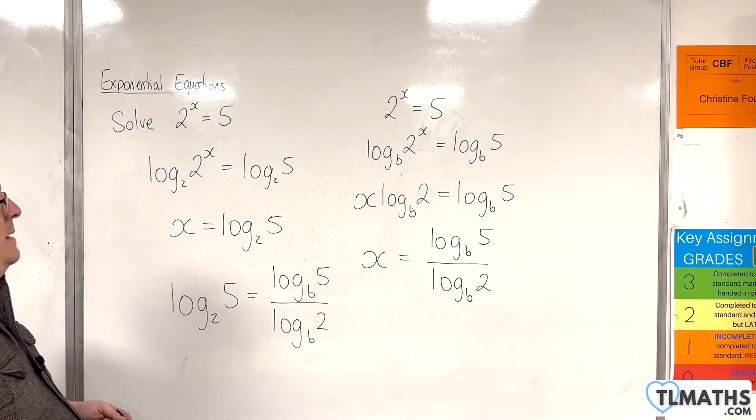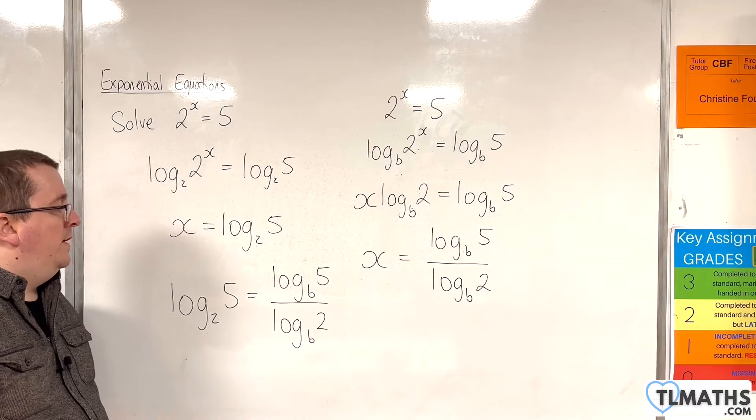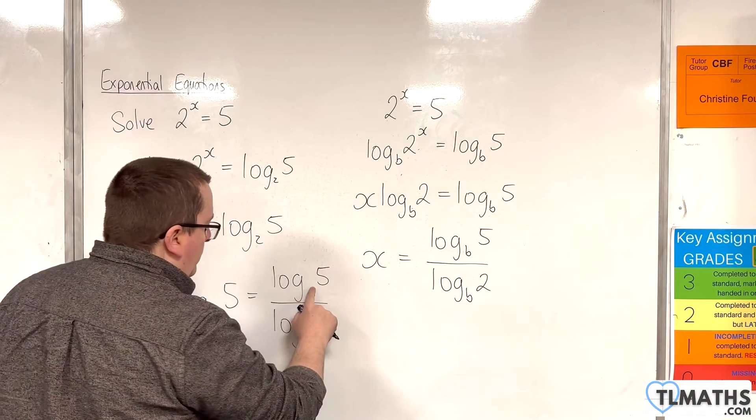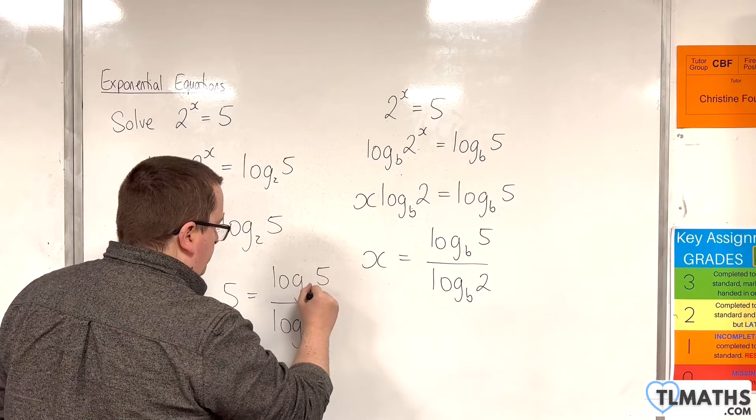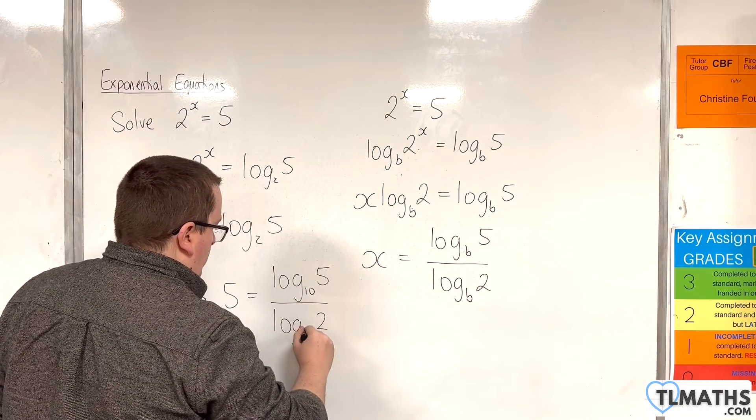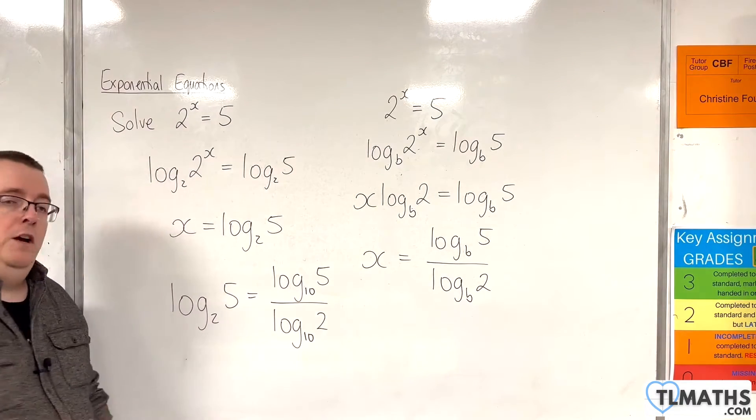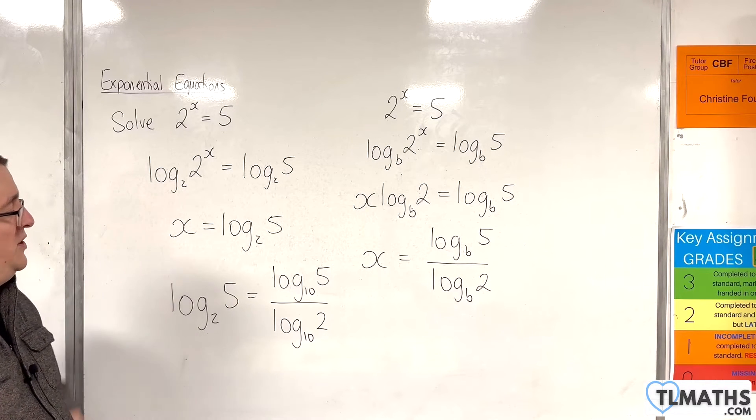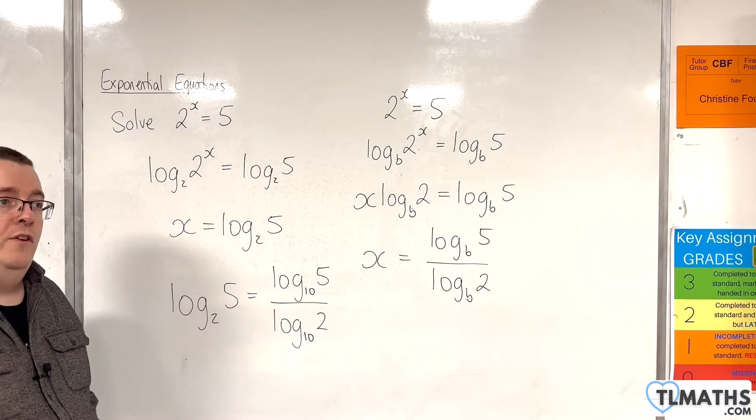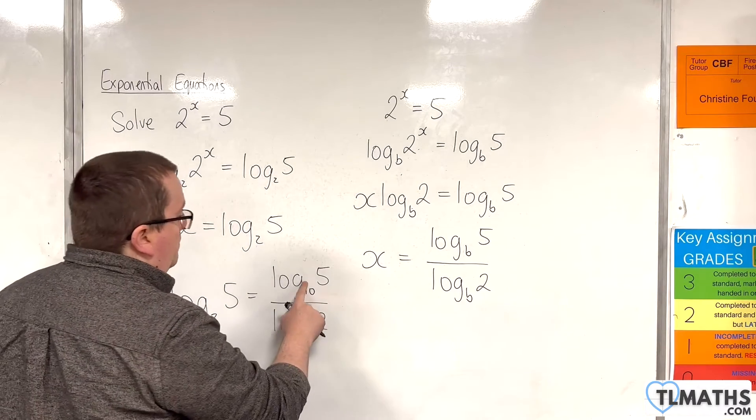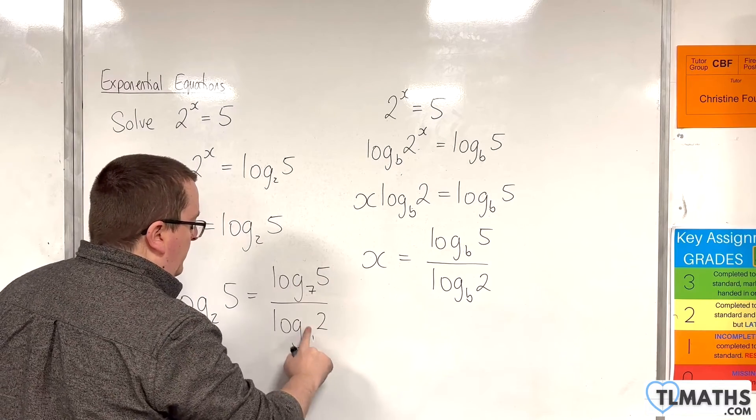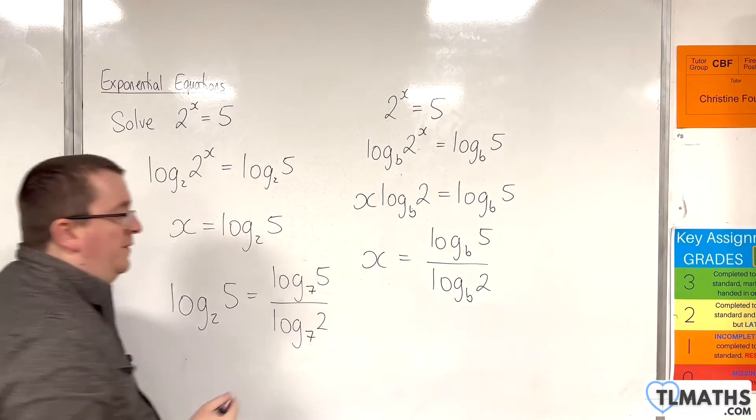So, let's say I want to write log base 2 of 5 in terms of log base 10. That would be log base 10 of 5 over log base 10 of 2. What if I wanted to write log base 2 of 5 in terms of base 7? Well, that would be log base 7 of 5 over log base 7 of 2.